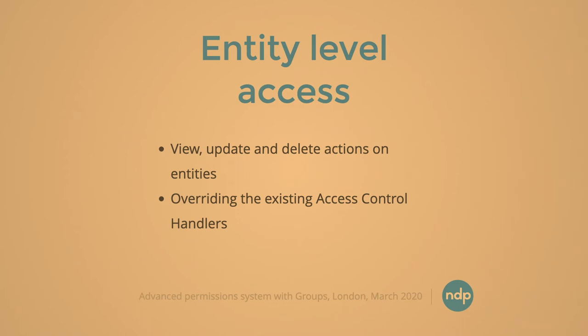At the entity level, we've got view, update, and delete actions, and some additional ones like view own published and view own unpublished. It's basically up to you to determine which ones you want. That also meant we had to override the existing access control handlers. Those familiar with entities know there's a big annotation on top of the class, and inside of which there's one in particular interesting to us: the access control handler. That defines the class that determines access to that entity.